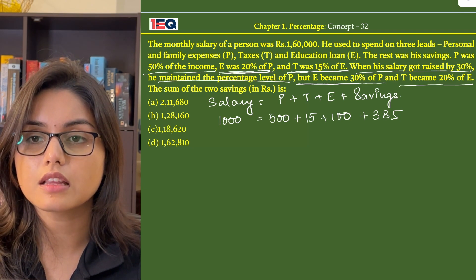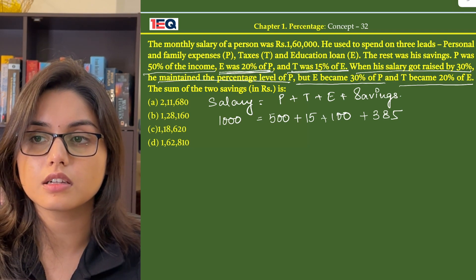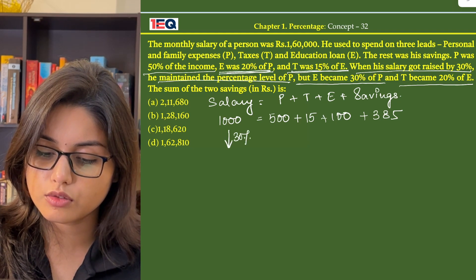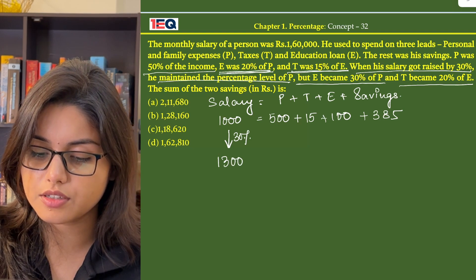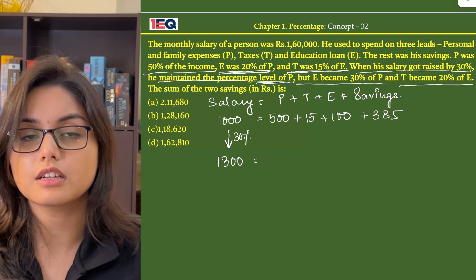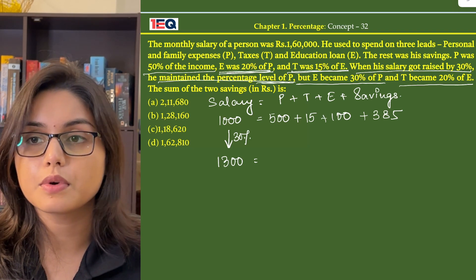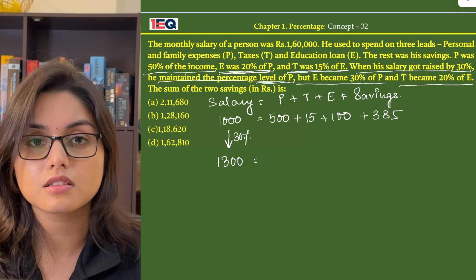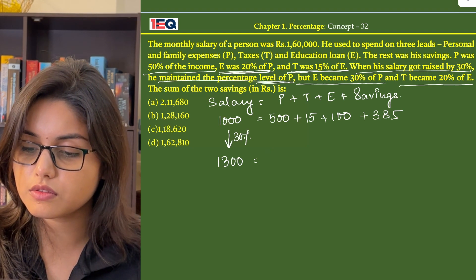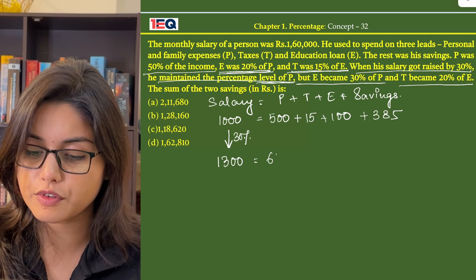Then they say that his salary got raised by 30%. So 1000 gets raised by 30%. So the salary is now 1,300. He maintains the percentage level of P. That means his personal and family expenses still stand at 50% of his income. So 50% of 1,300 is 650.